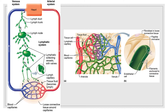Lymph capillaries are very similar to blood capillaries, but remarkably permeable — once thought to be open at one end. Instead, the edges of the endothelial cells forming their walls loosely overlap one another, forming mini valves. They act as one-way swinging doors. The flaps are anchored by fine collagen fibers to surrounding structures and gape open when fluid pressure is higher in the interstitial space, allowing fluid to enter the lymphatic capillary. When pressure is higher inside the vessel, the endothelial cell flaps are forced together, preventing lymph from leaking back out and forcing it to continue moving toward the heart.